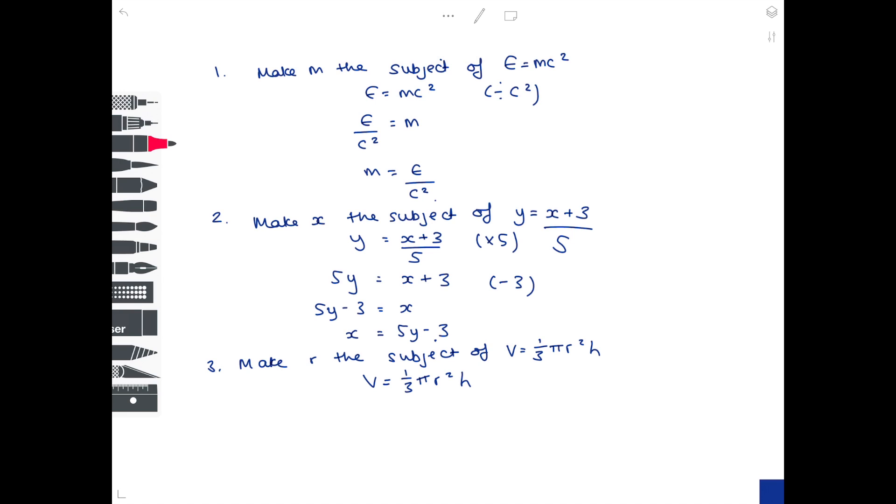And remember we do the same to both sides of the equal side. So let's do times by 3 is our first step to get 3v equals pi r squared h. The next issue is that r squared is being multiplied by pi and h. So to get rid of those we need to divide by pi h.